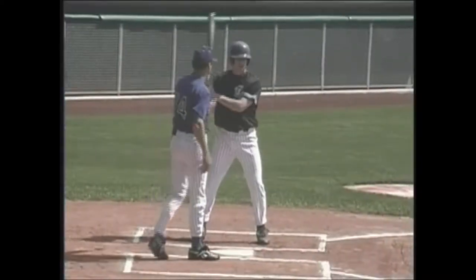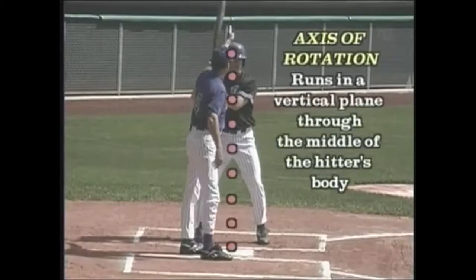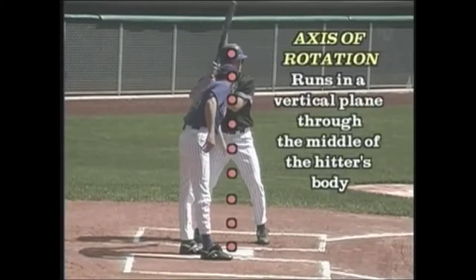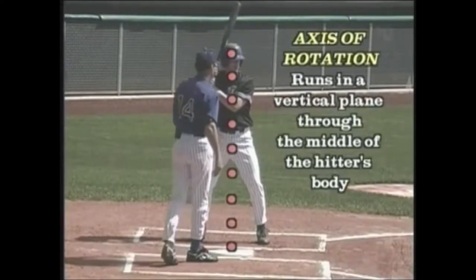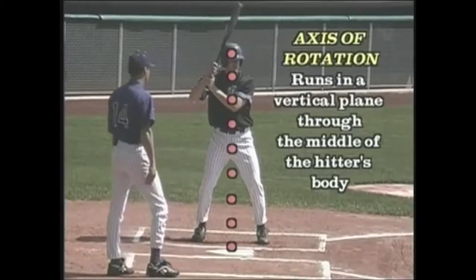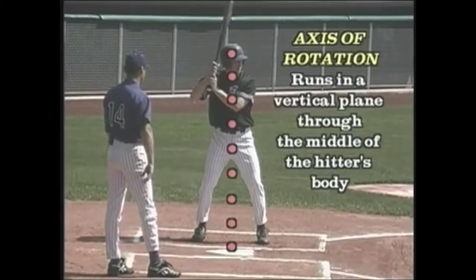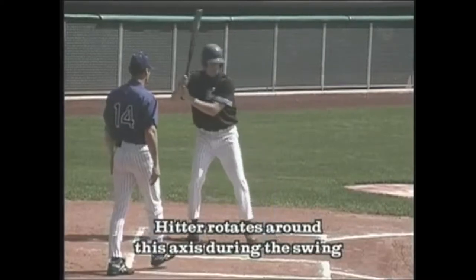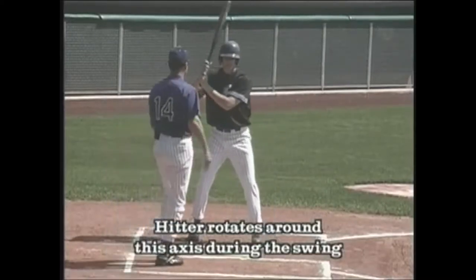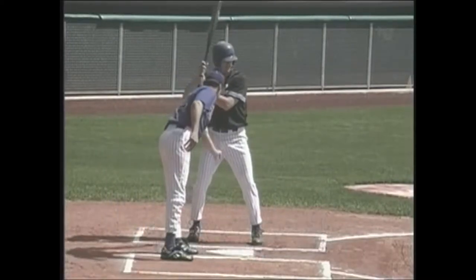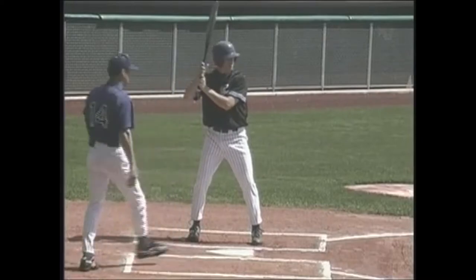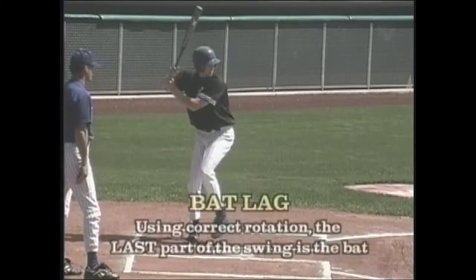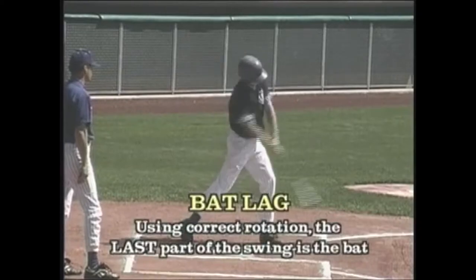The axis of rotation runs on a vertical plane right through the middle of the hitter's body, and he will actually rotate around that axis in his swing. As that rotation takes place, the last thing to come in the swing is the bat. This is known as bat lag.